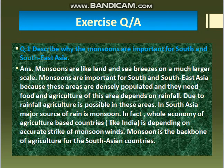Monsoons are important for South and Southeast Asia because these areas are densely populated. The people of South and Southeast Asia need food, and the agriculture of these areas depends on rainfall. Crops and agriculture in these regions are possible due to rainfall, making monsoons critical for food production.